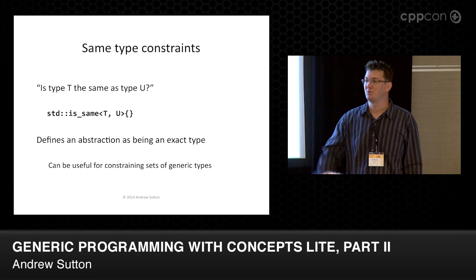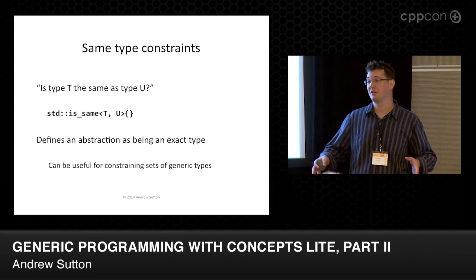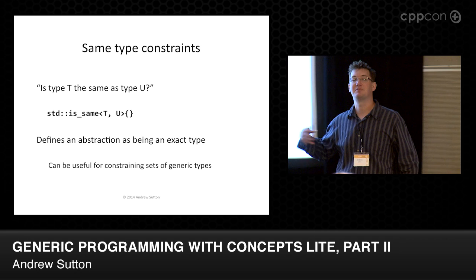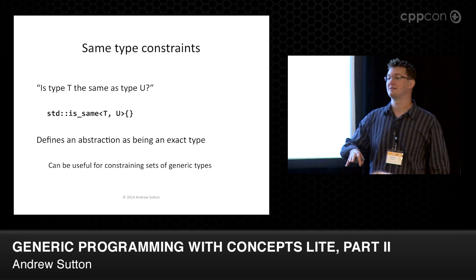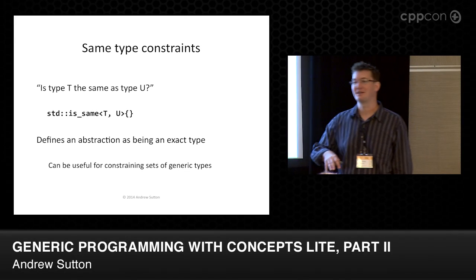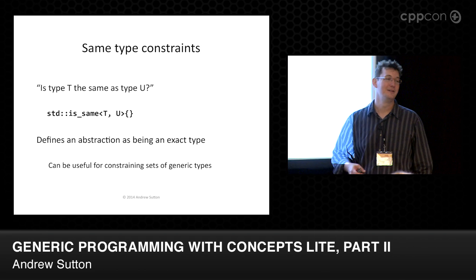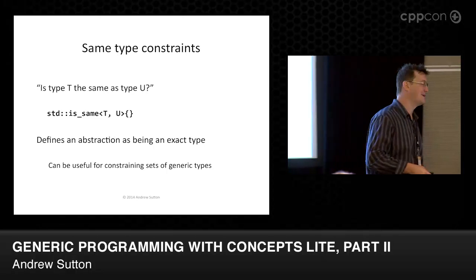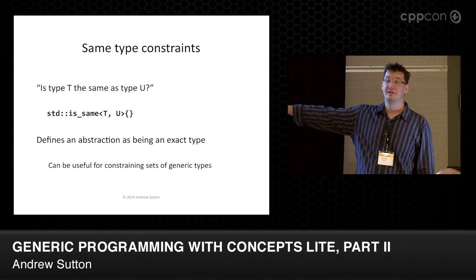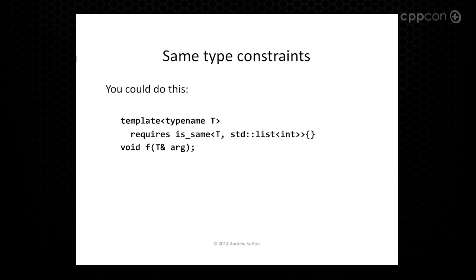Like begin and end — this is where Eric Niebler would tell me I was wrong, because apparently begin and end can return different types. But this is one place where you would use is_same. If you try to define a template like this, it's totally legal — you can do it. But I don't know what you're trying to get out of it, because you can do essentially the same thing without a template.